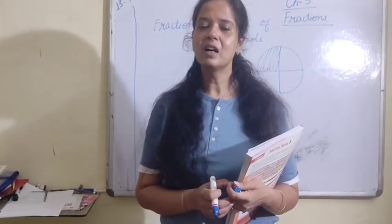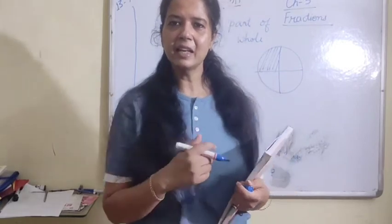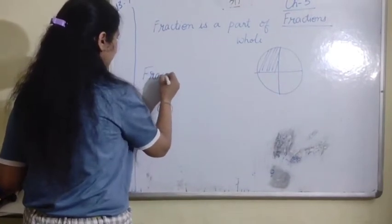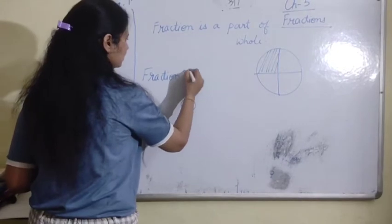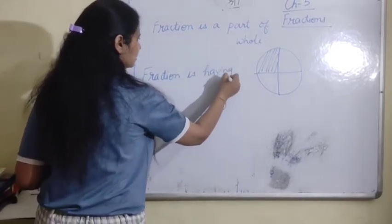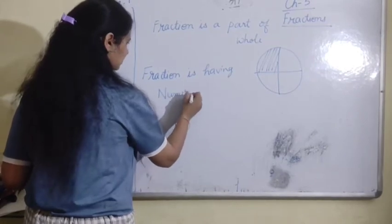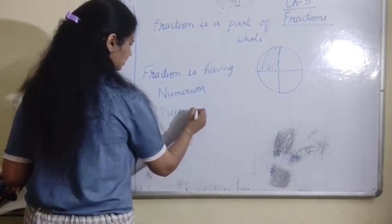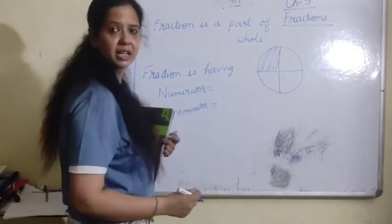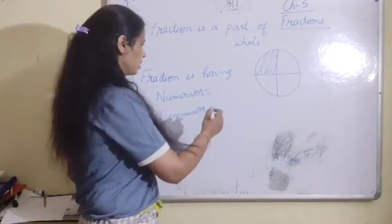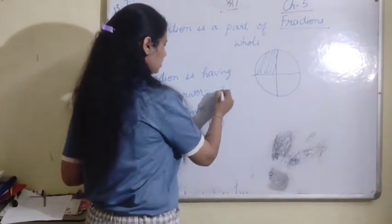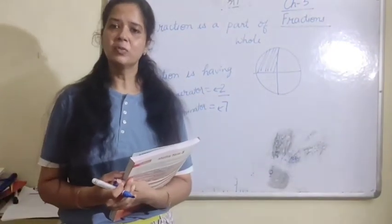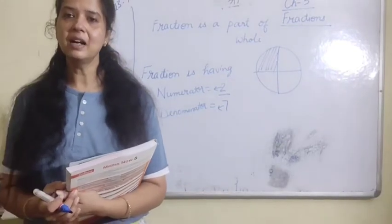As you all know, division is repeated subtraction. A fraction has a numerator as well as a denominator. Ab numerator aur denominator kya hota hai? See — 2 upon 7. The part which is above the line is known as the numerator, and the part which is below the line is known as the denominator.